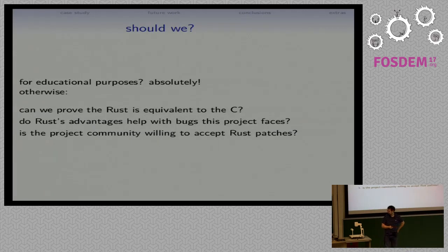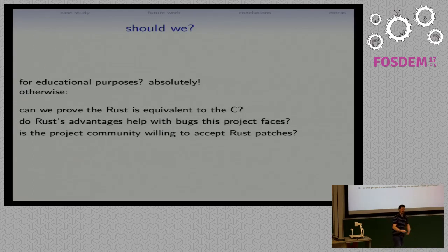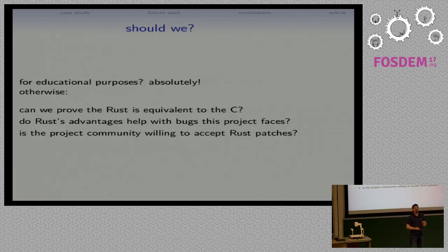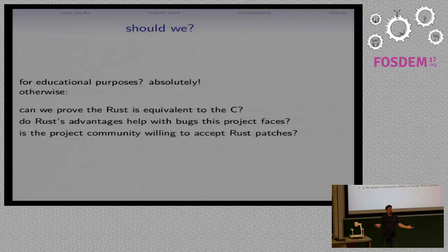Another principle is asking whether Rust's advantages are actually going to help with the kinds of bugs the project faces. If you're looking at a project with a significant component that interacts with the network or untrusted data, that might be a really strong argument for switching to Rust. If it's something where you don't deal with untrusted data at all and you're barely touching memory, maybe Rust's advantages are not so helpful. Finally, is the project community actually interested in accepting patches that switch to Rust? If I throw a Mesa patch at the guys in the front row, are they going to take it? Seeing a lot of head shakes there — so don't waste your time on patches that aren't going to get accepted.